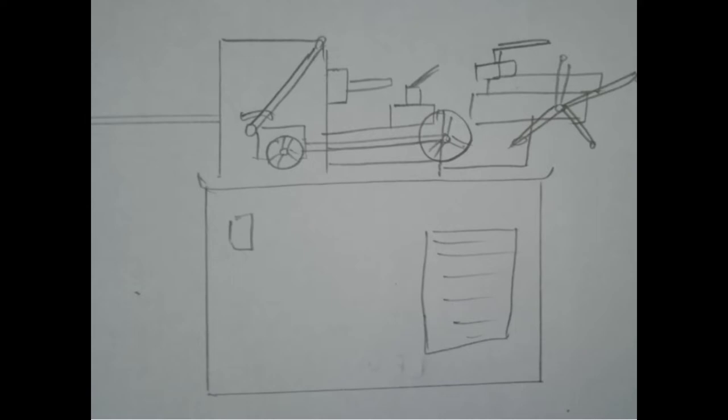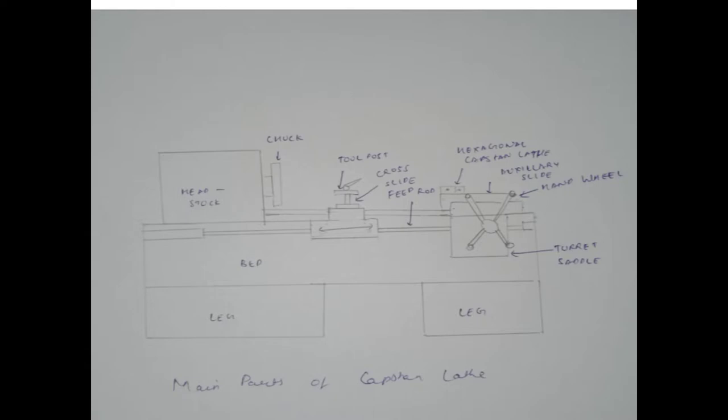The main parts of capstan lathe are headstock, carriage or chaser saddle, turret saddle, bed, and legs. I will go with bottom-up explanation of the diagram in the order I have drawn the parts. Our first part of discussion is legs.